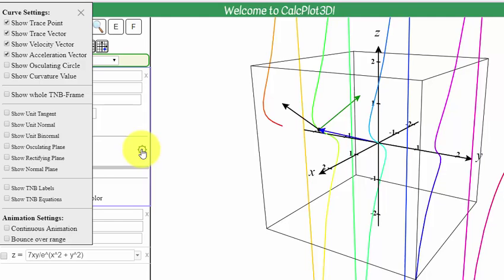But one of the things you might be interested in is say the unit tangent and unit normal. Maybe I don't want all this other trace stuff except maybe the point. I think I want the trace point, which is going to also plot the point. If I undo these boxes, show trace vector, show velocity vector, and show acceleration vector. Maybe I just want the unit tangent and unit normal. I can click those boxes.